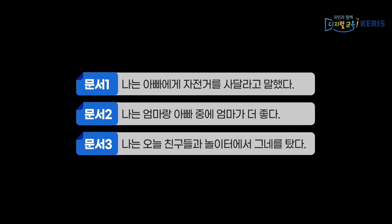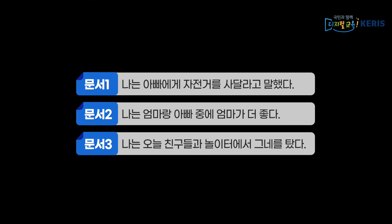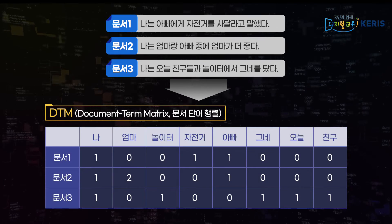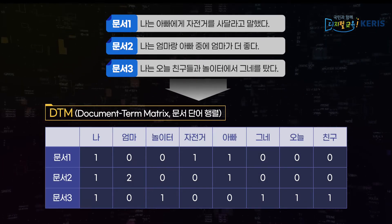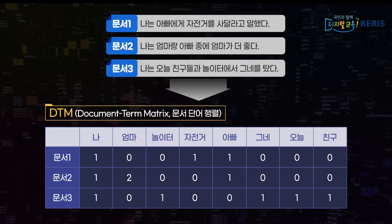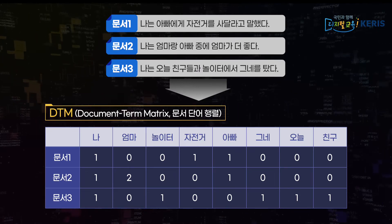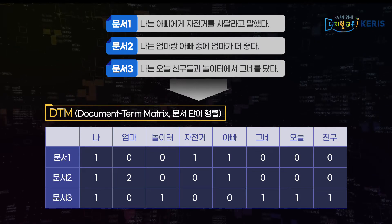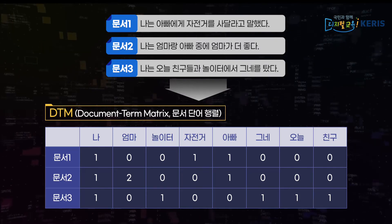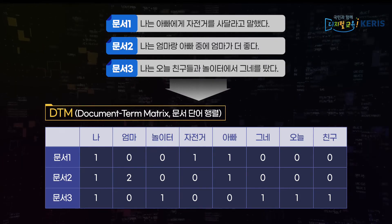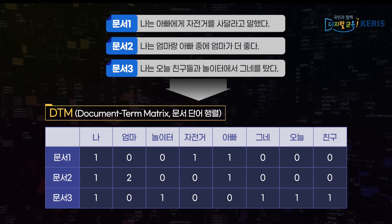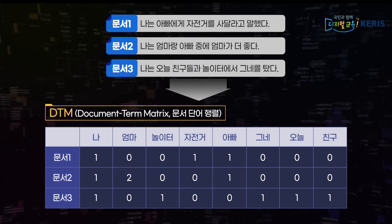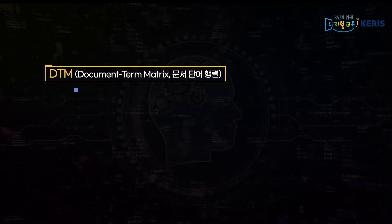다음 세 문장을 예로 들어 용어 빈도를 측정해보면 DTM, 즉 문서 단어 행렬을 만들 수 있습니다. 하지만 특정 단어가 많이 등장하더라도 모든 문서에 공통적으로 등장한다면 키워드가 아닐 가능성이 높습니다. 어렸을 때 썼던 일기장을 살펴보면 '오늘 ~~을 했다'라는 문장을 매일 쓴다고 해서 '오늘'이 키워드가 아닌 것처럼 말입니다.